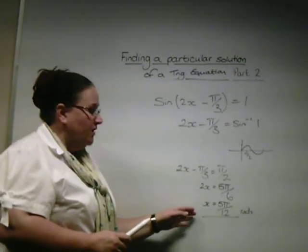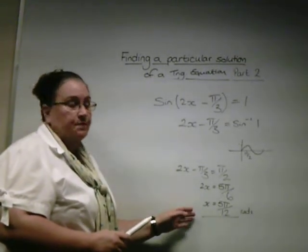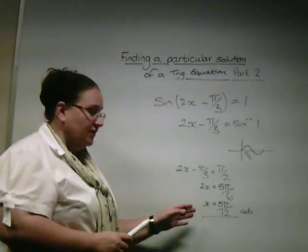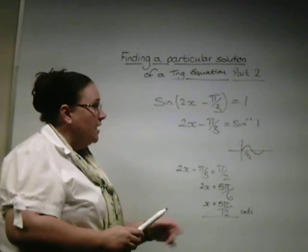I would rather mark 5 pi by 12 than a horrendous long decimal. So if you can leave it in terms of pi, do so because it just saves a lot of work and a lot of agro on your part.